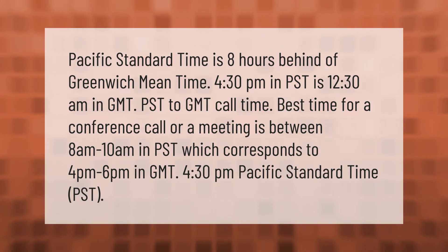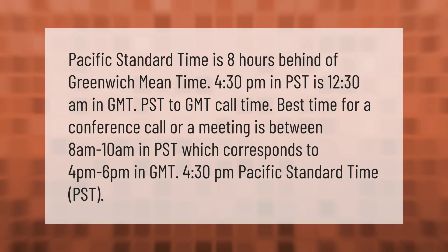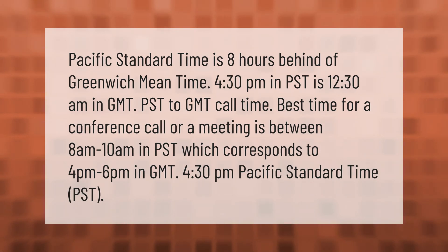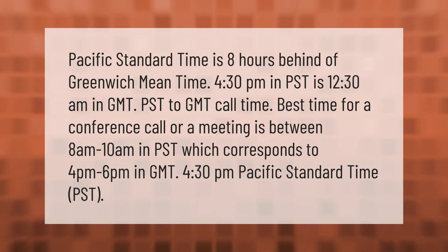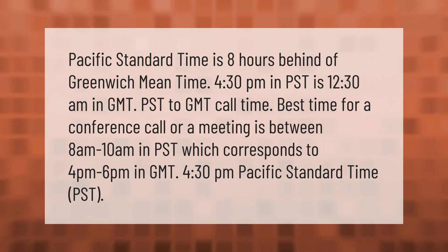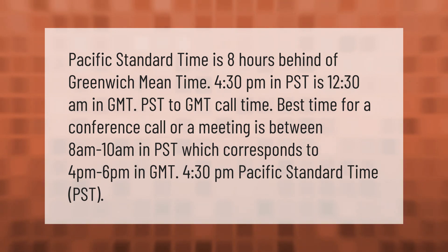Pacific Standard Time is eight hours behind Greenwich Mean Time. 4:30 p.m. in PST is 12:30 a.m. in GMT. For PST to GMT calls, the best time for a conference call or meeting is between 8 a.m. to 10 a.m. in PST, which corresponds to 4 p.m. to 6 p.m. in GMT.